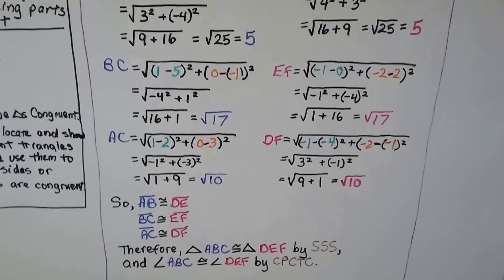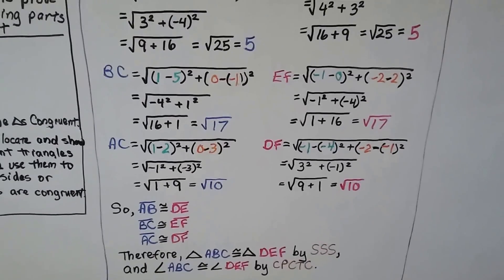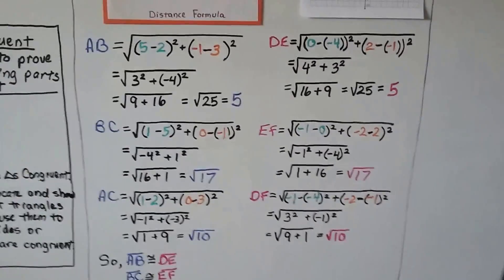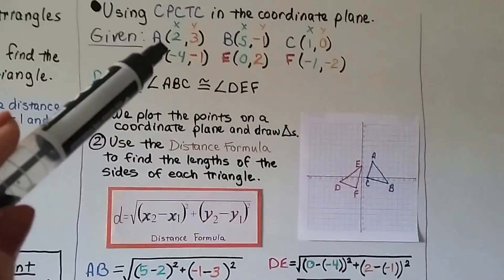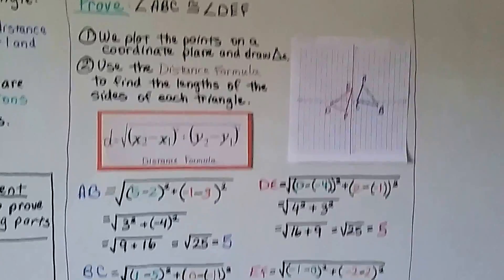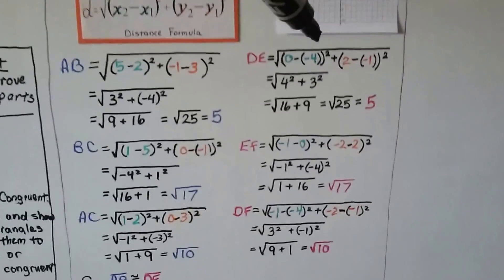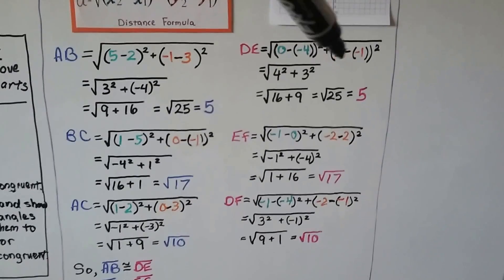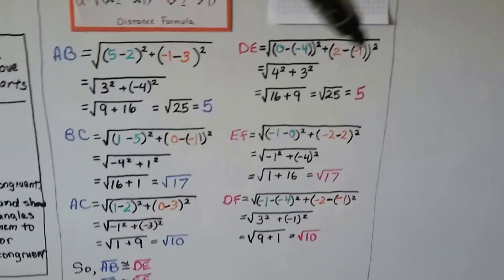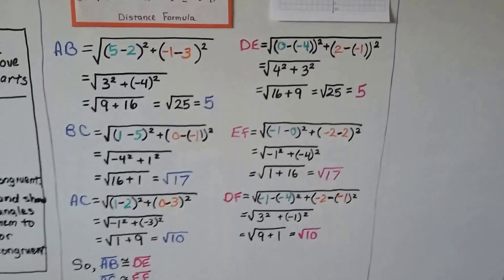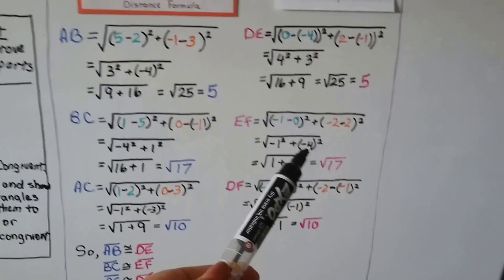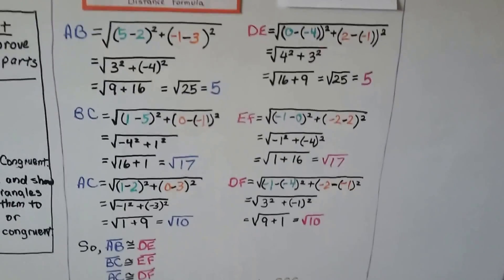Congruent parts of congruent triangles are congruent. When doing the arithmetic, remember that subtracting a negative means adding the opposite — so 2 minus negative 1 gives 2 plus 1, which is 3 squared. And negative 2 minus 2 gives negative 4 because that 2 was positive.